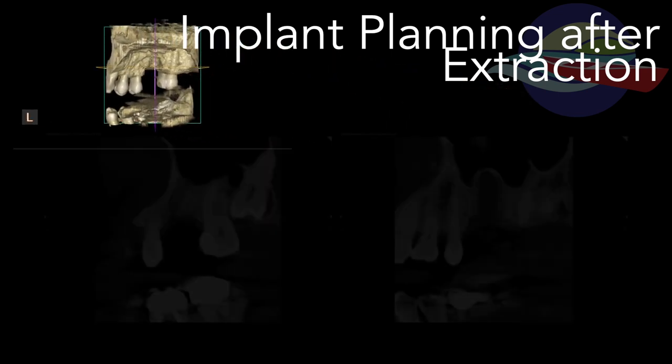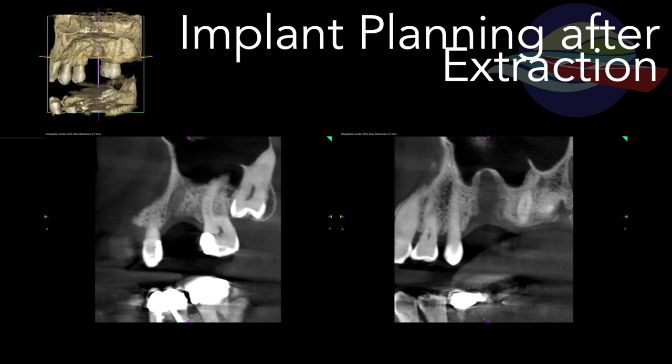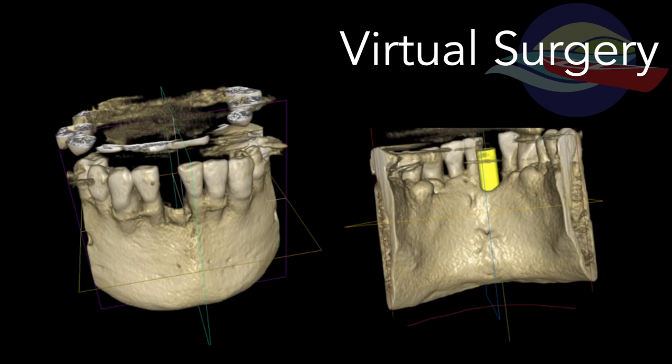We can also look at all of the 2D slices of that 3D image and measure the exact distance to the sinus and the exact distance between the neighboring teeth. This allows us to determine the length and the width of the implant to be placed prior to our patient even being in the operatory. Software now even allows us to take implant planning one step further and perform this virtual surgery.